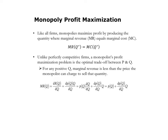We take the price as a function of quantity times the derivative of quantity with respect to quantity, plus quantity times the derivative of price as a function of quantity with respect to quantity. This simplifies to: MR, or marginal revenue, equals price plus the derivative of price with respect to Q times Q.